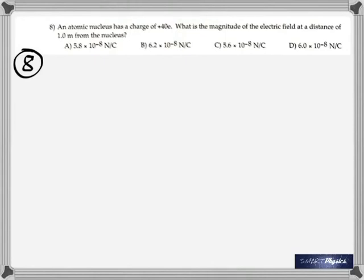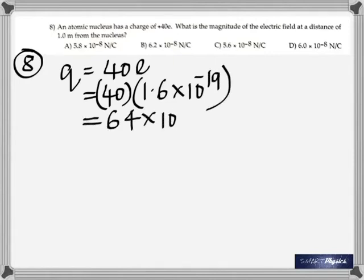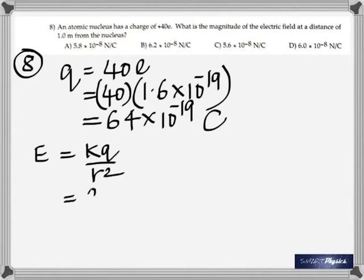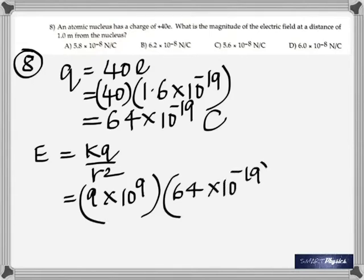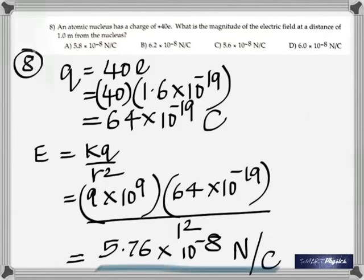Question eight: an atomic nucleus has a charge of 40 times e — that is 40 times the charge of the electron. What is the magnitude of the electric field at a distance of 1 meter from the nucleus? So q = 40 × e, which gives the charge of the nucleus. The electric field is E = k·q / r². With q = 40 × 1.6 × 10⁻¹⁹ C and r = 1 m, you get E = 5.76 × 10⁻⁸ newton per coulomb.